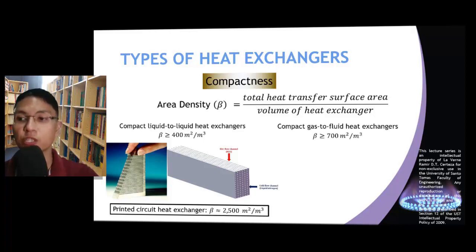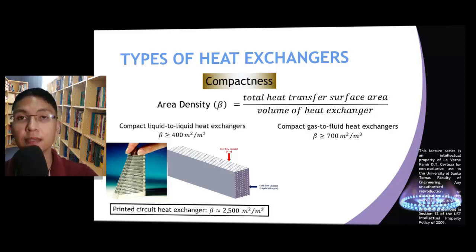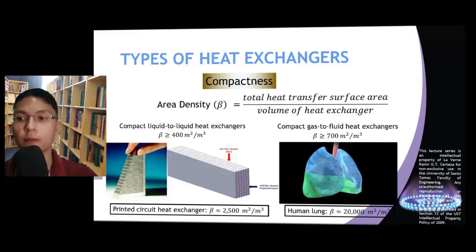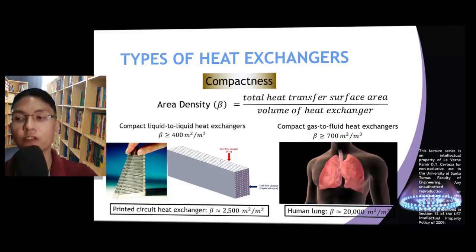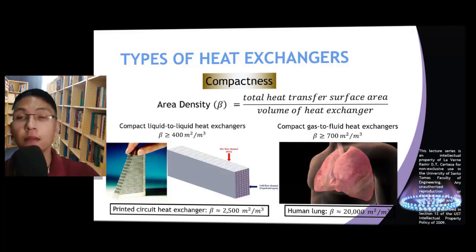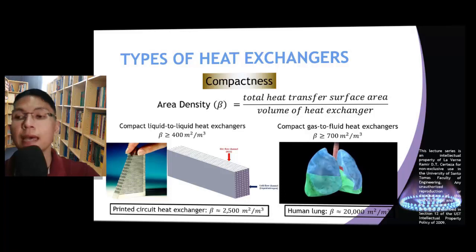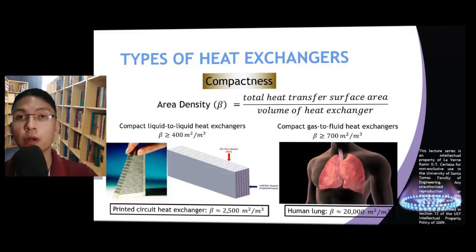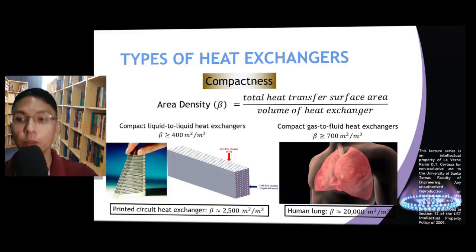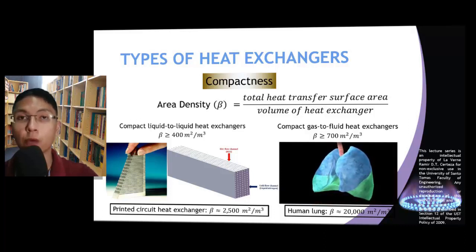On the other hand, a heat exchanger in which one of the heat transfer fluids is a gas, while the other is either a liquid or a gas, can be considered compact if its area density exceeds 700 square meters per cubic meter. An example of this is our lungs, which has an area density of approximately 20,000. This is due to the heat exchange that happens in our lungs between the air that we breathe and the warm blood circulating in our body.